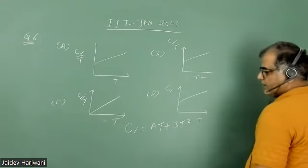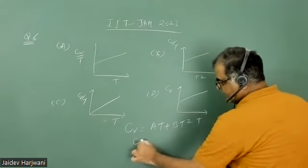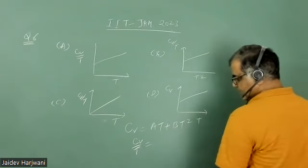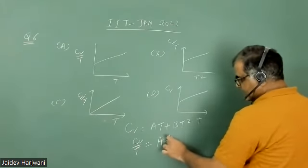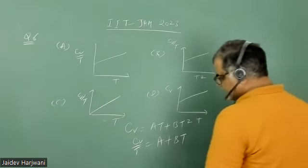Now in the question, they have plotted CV/T versus T. When we divide CV by T, we get CV/T = A + BT. This is in the form y = MX + C, a linear equation.